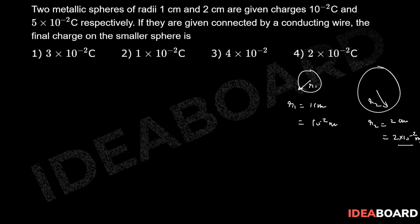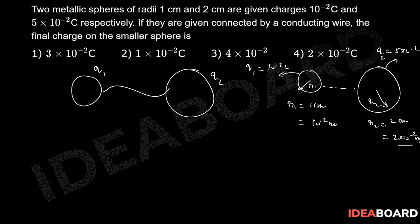Now, this is r1 and r2, and the initial charge on this one is q1, which is 10 to the power minus 2 coulomb, and on this, q2 will be 5 into 10 to the power minus 2 coulomb. Now they are being connected with a wire, so let us draw the diagram again. If they are connected with the wire like this, let us assume that charges are q1 and q2.